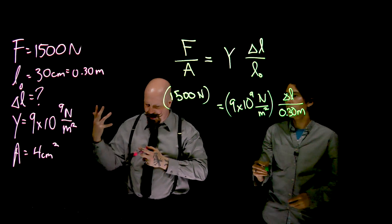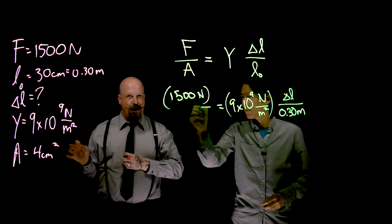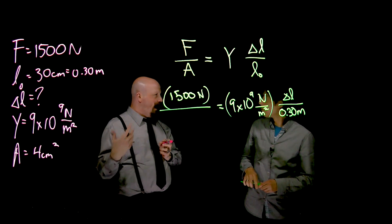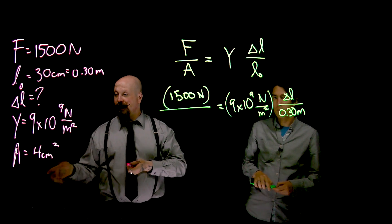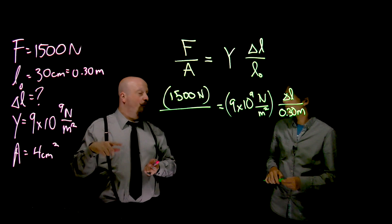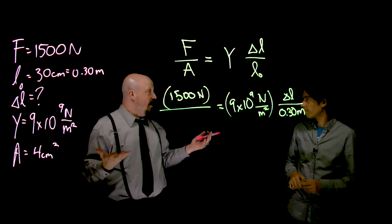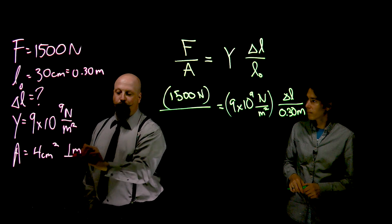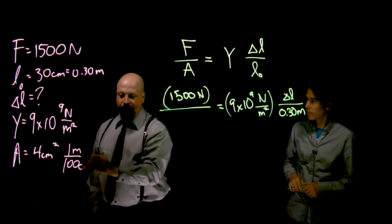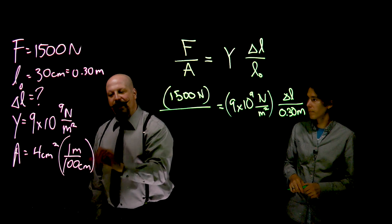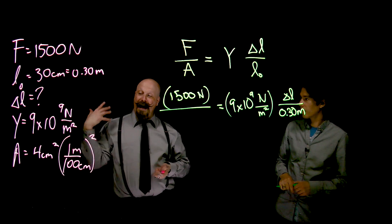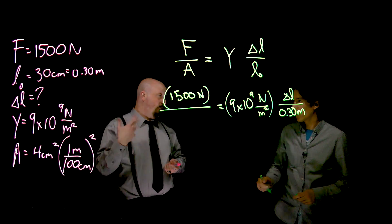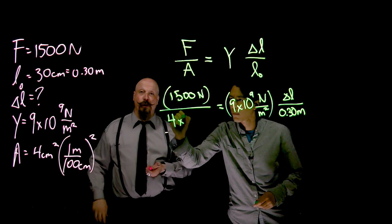And that leaves us with the area. In terms of the actual area, we've got 4 centimeters squared. One of the most common problems that people have with this is improper unit conversions. 4 centimeters squared is not the same thing as 0.04 meters squared. To convert from centimeters squared to meters squared, you have to realize that there is 1 meter per 100 centimeters. But we square that entire amount. So what that means is it's actually 4 divided by 100 divided by 100. So 4 times 10 to the negative 4 meters squared.